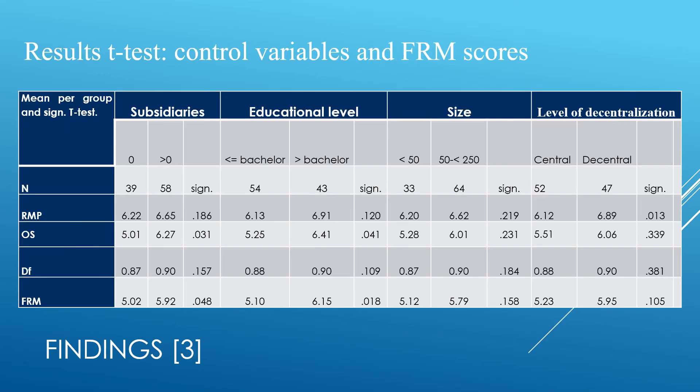This table presents the outcome of the check we did at the control variables that were previously detected by other researchers. A t-test is executed at all levels of our financial risk management framework. The number of subsidiaries, educational level, as well as the level of decentralization, seem to be determinants for a certain level of our financial risk management framework.